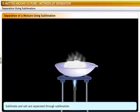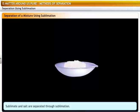Ammonium chloride changes directly from the solid to the gaseous state on heating. This is known as sublimation. So, to separate a mixture that contains a salt and a sublimable solid such as ammonium chloride, you can use the process of sublimation.